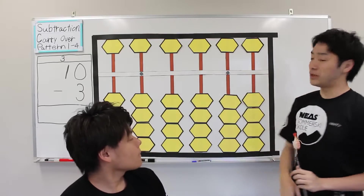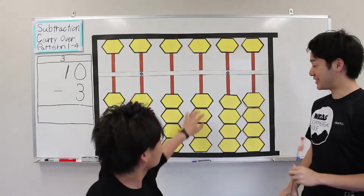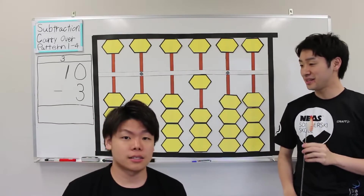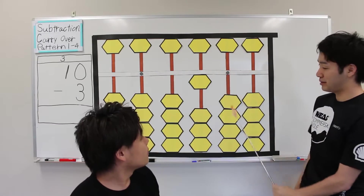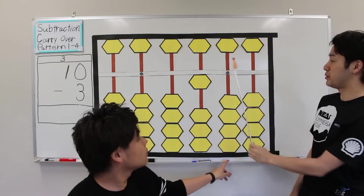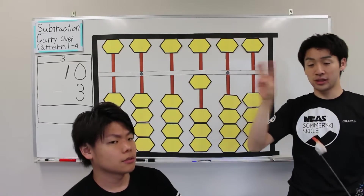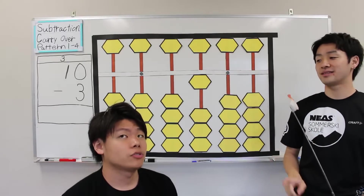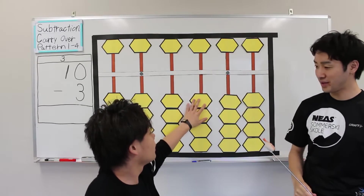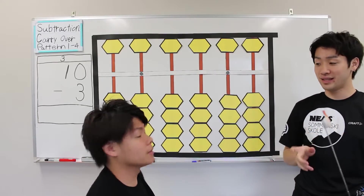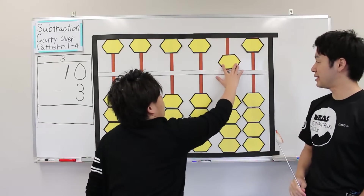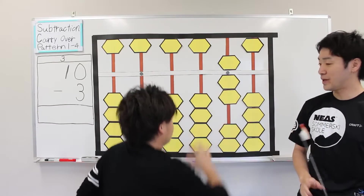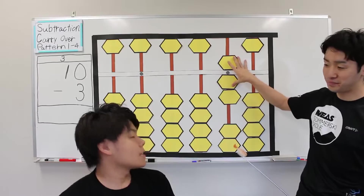First, plus 10. Next, minus 3. 2, subtract 3, subtract 10, and add 7. The answer is 7.